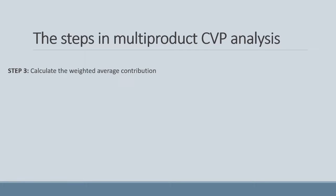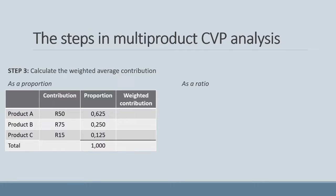Step 3 is to calculate the weighted average contribution. We need to stick with the method chosen in step 2. Using the proportion method, we take the contribution and multiply it by the proportion. Product A's contribution of 50 Rand multiplied by its proportion of 62.5% gives a weighted contribution of 31 Rand 25 cents. Doing the same for products B and C gives a total weighted contribution of 51 Rand 875.